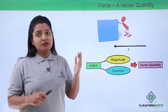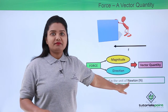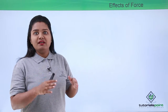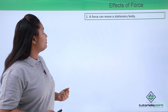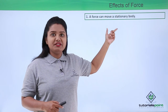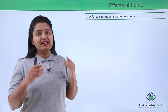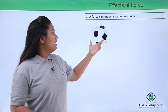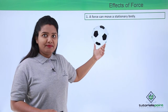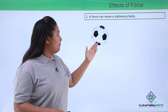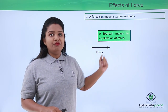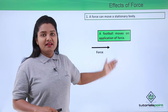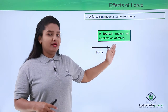We measure force in terms of a unit called Newton. Now let us look at the effects of force — what a force can do to a body. The first effect is that a force can move a stationary body. For example, a football at rest: if you kick it, you apply a force in a certain direction, and the ball starts moving in the direction of that force.